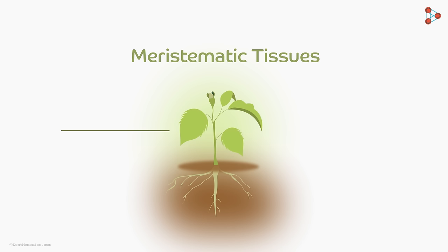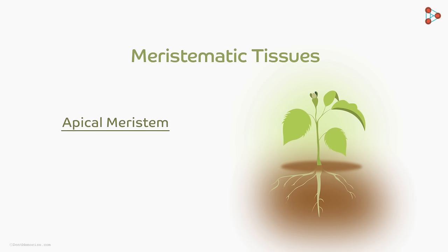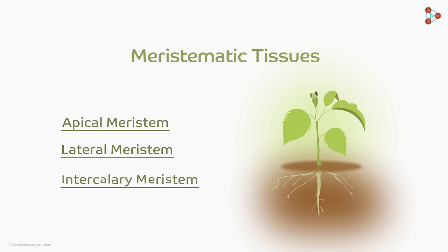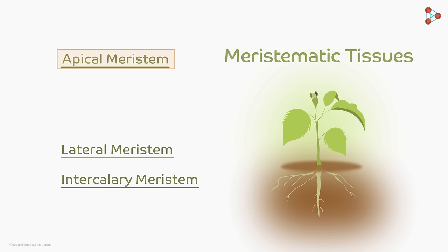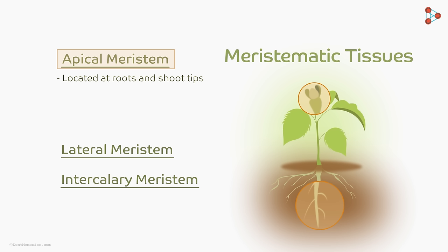The first is the apical meristem, the second is the lateral meristem, and the third is the intercalary meristem. Apical meristem tissues are found in the growing tips of the stems and the roots. This tissue divides and helps increase the length of the plant.